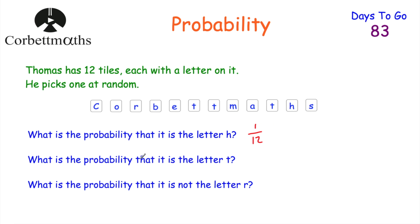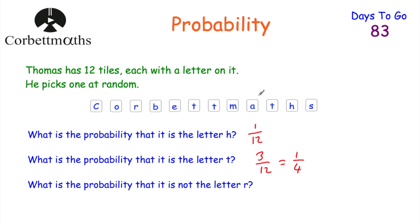Next: the probability that the tile is the letter T. There are 12 tiles altogether, and three of them have T's on them. So the probability of picking a T would be three twelfths. You could simplify this — both numbers are divisible by three — giving one quarter. So the probability of picking a T at random from these 12 letters is one quarter.